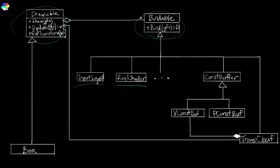Classes inherit from Bindable and implement the bind interface with the logic required to bind that particular resource. On the other side, entities that are drawable — called 'Drawable' — are comprised of one or more bindable things. Every drawable needs a pixel shader, vertex shader, input layout, and constant buffers. It holds a collection of bindables, and when you call draw it will call bind on each bindable in its collection, then call draw on Graphics. The beauty is all bindables are under a single interface, so you can put them all in a homogeneous container like a vector.